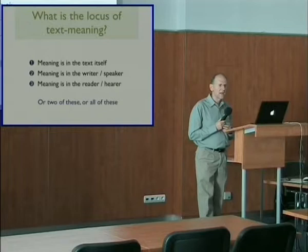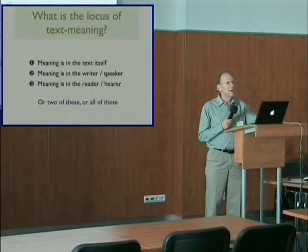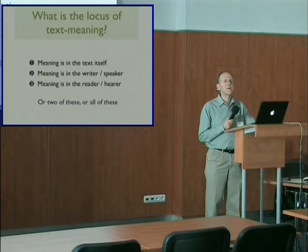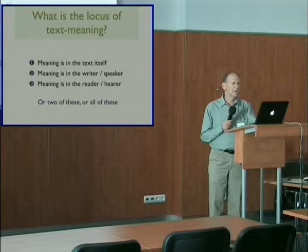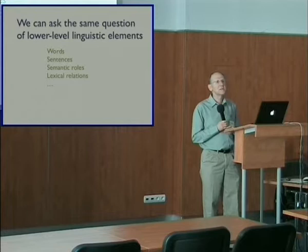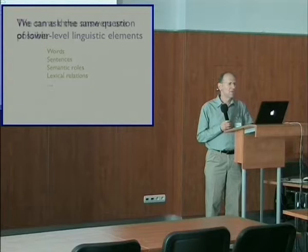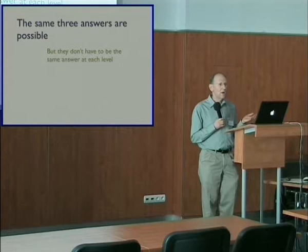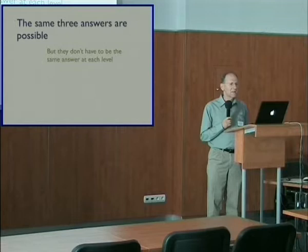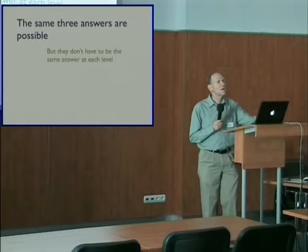Now, these answers aren't mutually exclusive. We could say meaning comes from more than one place — we could choose two out of three, or even all three. But in practice, philosophers and literary theorists don't tend to do that; they'd like one neat answer and choose just one of these three. Notice that we can ask exactly the same question about the locus of meaning for linguistic elements at levels lower than the text itself — words, sentences, semantic roles, and so on. We can have the same three possible answers, and the answer we choose for lower-level elements doesn't have to be the same as the answer we give at text level — we could have different loci of meaning at different levels.